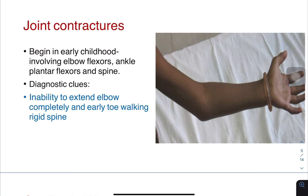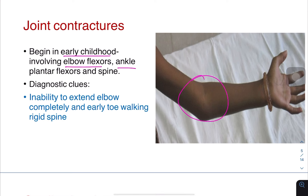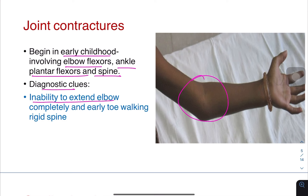Joint contractures are quite prominent as one of the triad features, beginning in early childhood. They involve the elbow flexors, ankle plantar flexors, and spine. The diagnostic clues are inability to extend the elbow completely, early toe walking, and rigid spine.